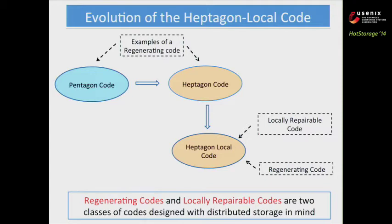The code we are interested in is called the Heptagon Local Code. This erasure code is built on top of another erasure code called the Heptagon Code, which itself is an extension of the Pentagon Code. These codes are all examples of families called regenerating codes or locally repairable codes. Both the Pentagon Code and Heptagon Code are examples of regenerating codes, while the Heptagon Local Code is an example of a locally repairable code. These codes are advocated for efficient storage in distributed storage systems.